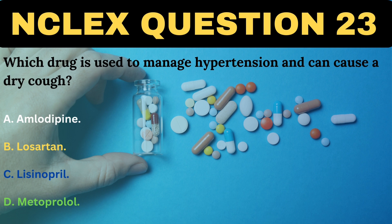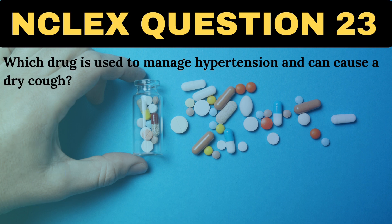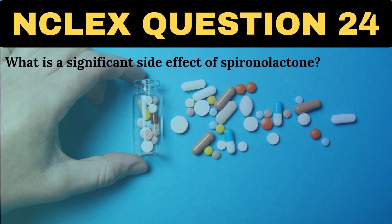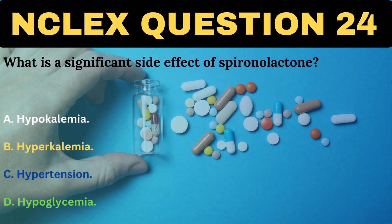Which drug is used to manage hypertension and can cause a dry cough? A. Amlodipine. B. Losartan. C. Lisinopril. D. Metoprolol. The correct answer is C, Lisinopril. Lisinopril, an ACE inhibitor, can cause a persistent dry cough due to the accumulation of bradykinin and substance P, which are degraded less effectively, leading to irritation of the respiratory tract.